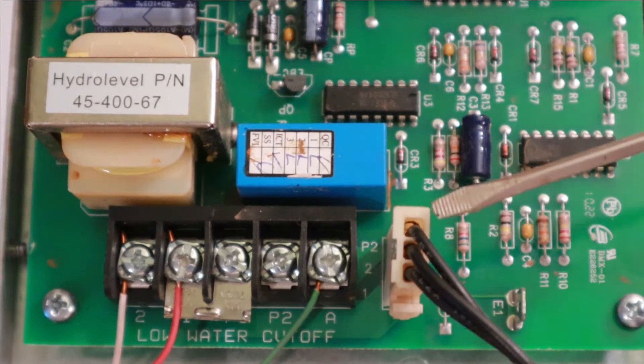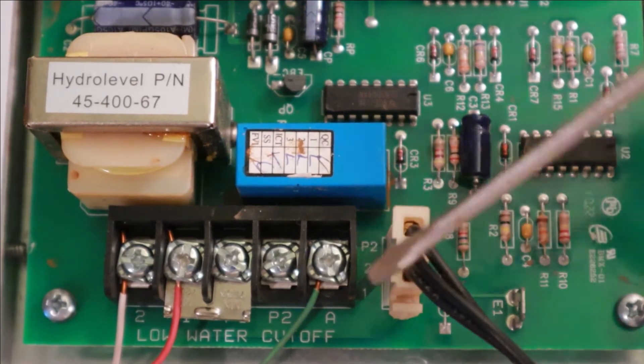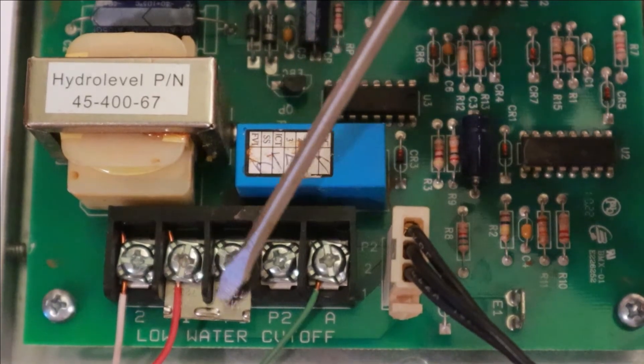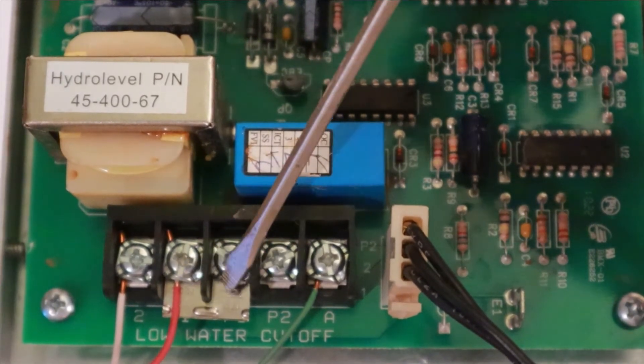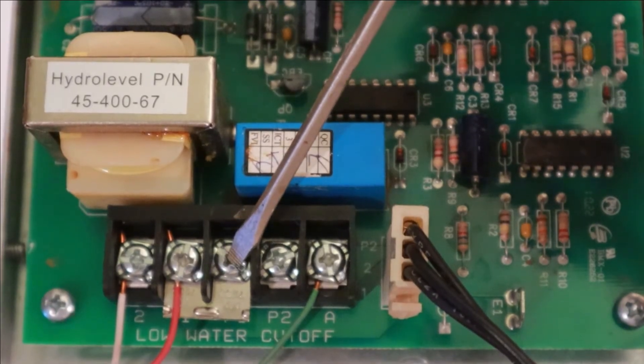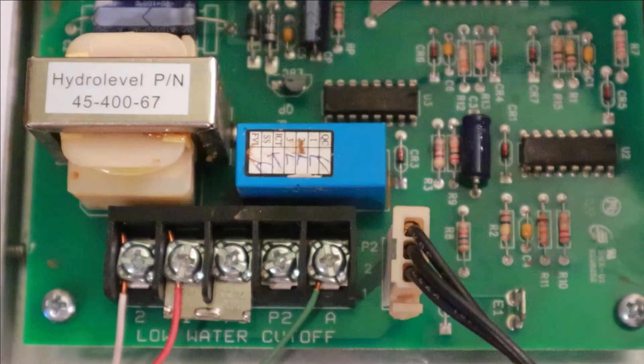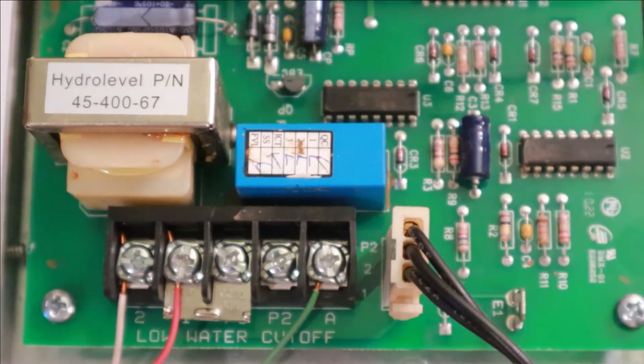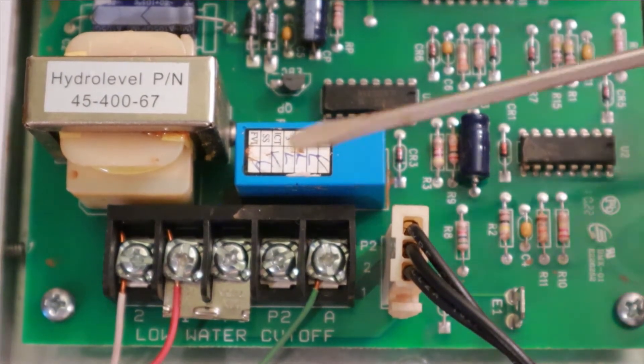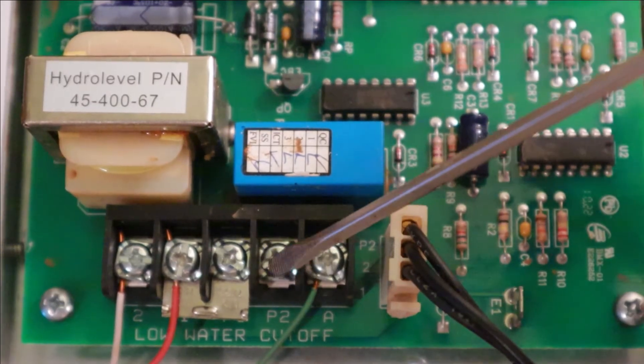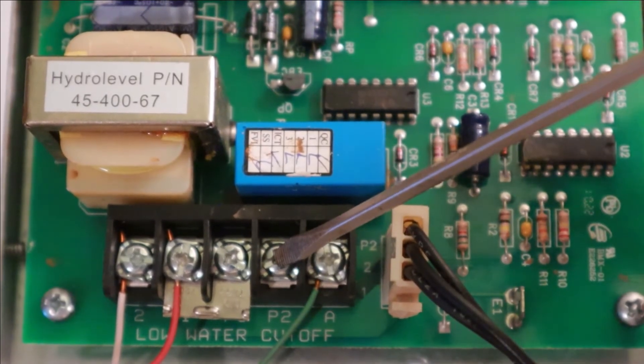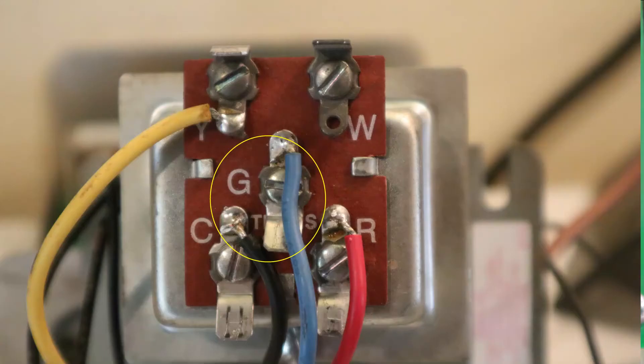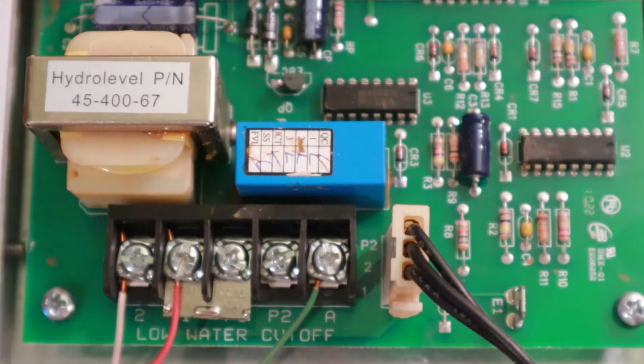You're going to have your power coming in. That's going to be on number one terminal here. So the factory jumper that's installed here is to provide power for the P1 terminal, which is for your low water cutoff, and that voltage has to make it through the low water condition in order to pass on to the P2 terminal right here. And that P2 terminal will come back out the black wire, and it goes to the G terminal on the transformer.